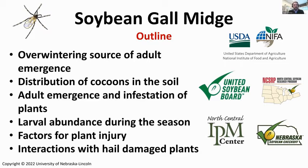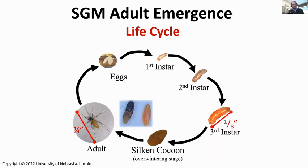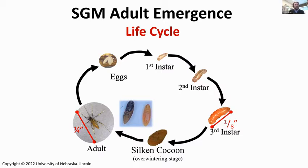The life cycle slide will be revisited a number of times throughout this talk. Starting with the silken cocoons, which are the overwintering stage for soybean gall midge — that's where this conversation begins. Justin will set things up for Mika Allison to talk about where cocoons are in the soil profile and their distribution in the field.